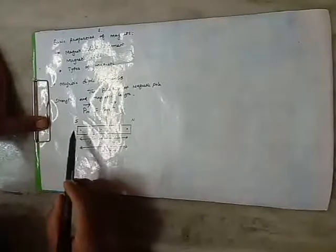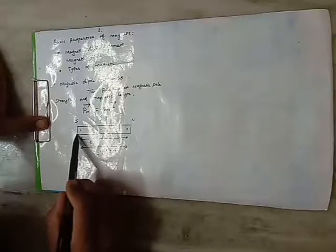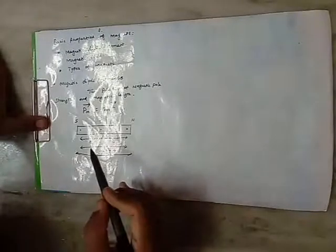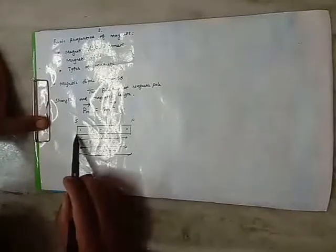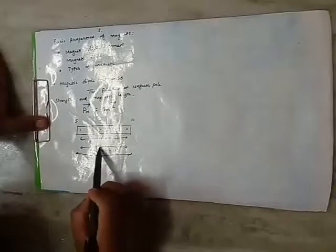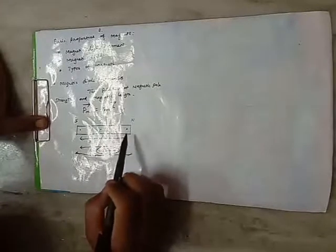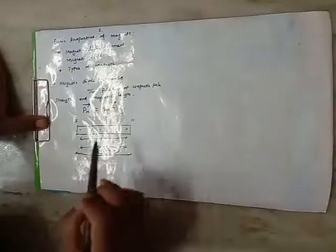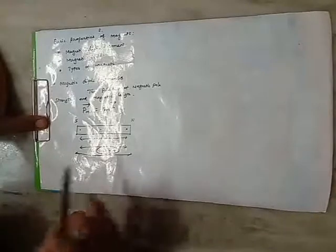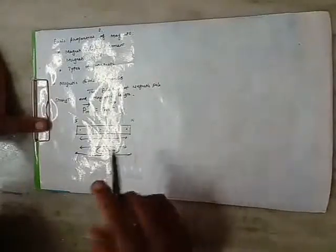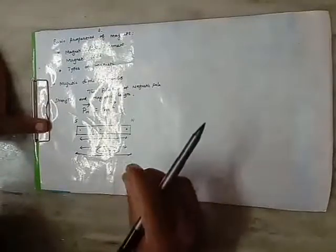Here, according to the geometry, the length of the magnet is always greater than the magnetic length. The length of the magnet means the distance between the edge of the north pole and the edge of the south pole. So the geometric length of the magnet is always greater than the magnetic length. Magnetic length means the distance between the north pole and the south pole.